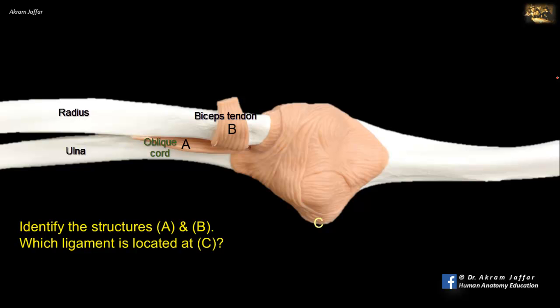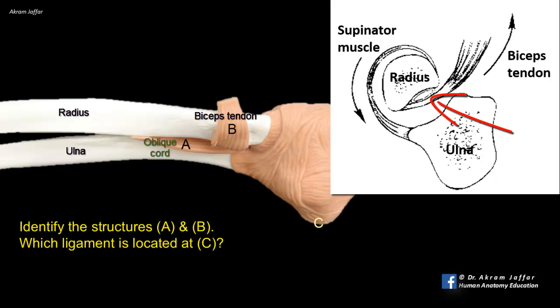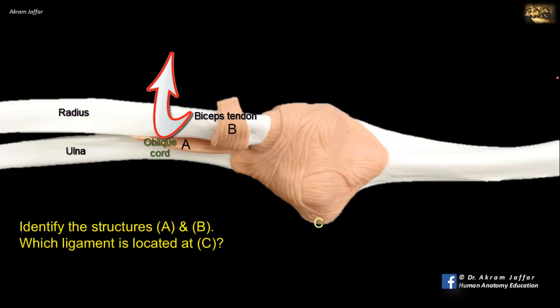The tendon is attached to the posterior part of the radial tuberosity, and there is a bursa intervening between the tendon and the remaining anterior part of the tuberosity. The supinator action of biceps is due to its insertion onto the posterior aspect of the radial tuberosity. So when the biceps contracts, not only is the forearm flexed, but the radius unwinds as its tuberosity is rotated anteriorly — that is to say, the forearm supinates.